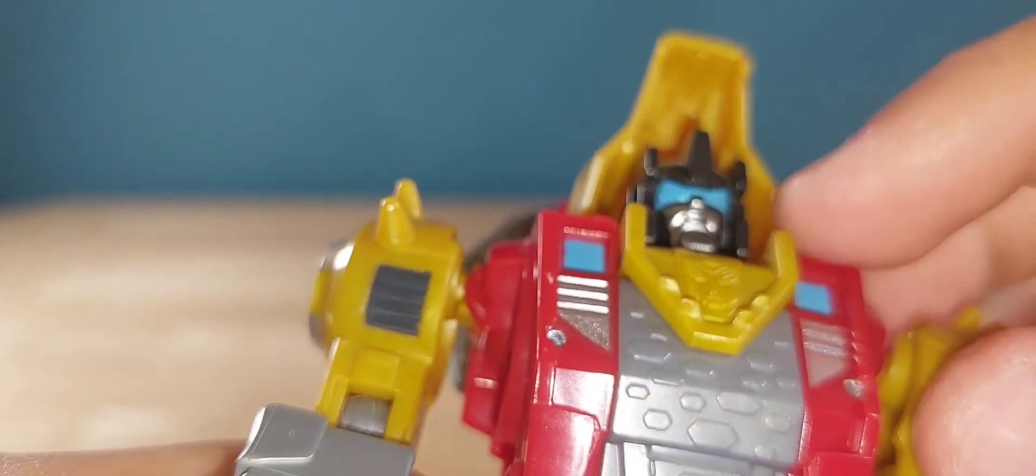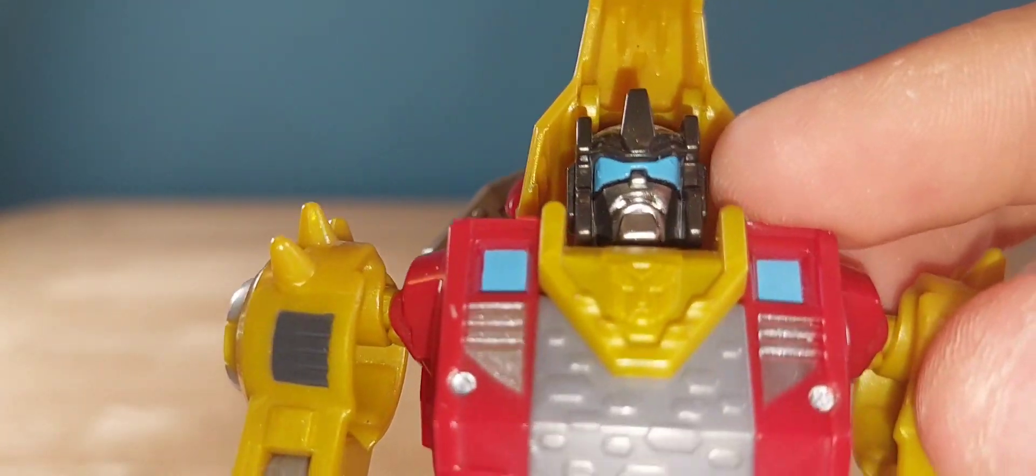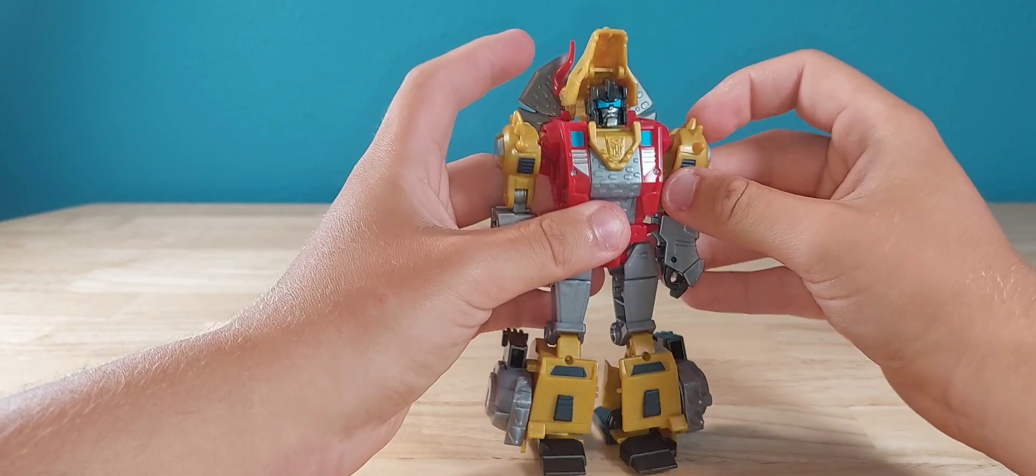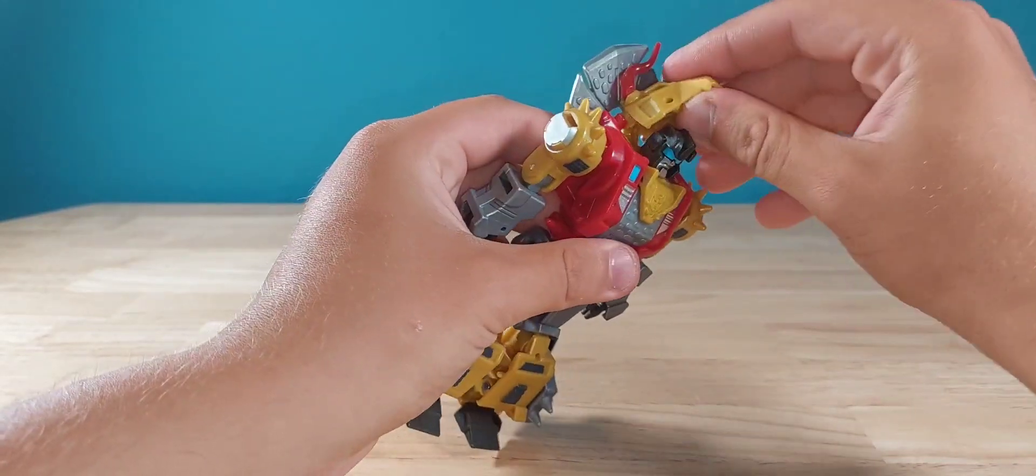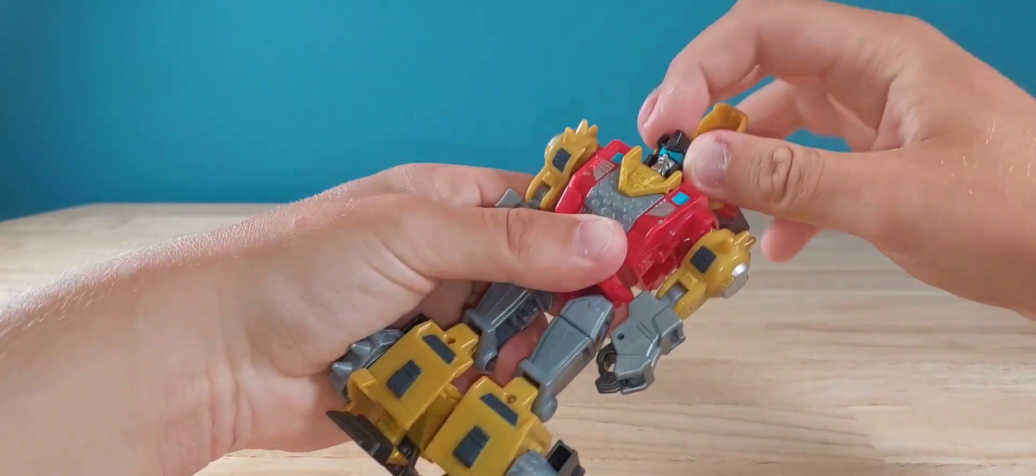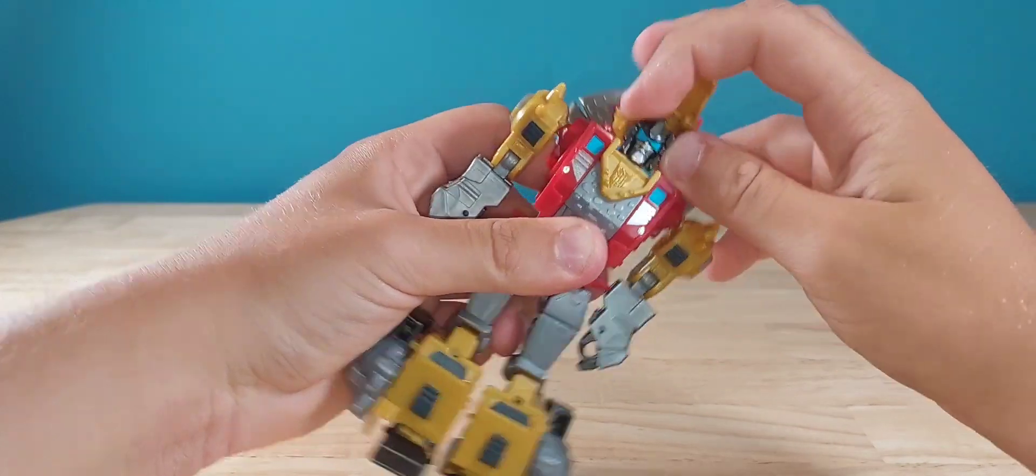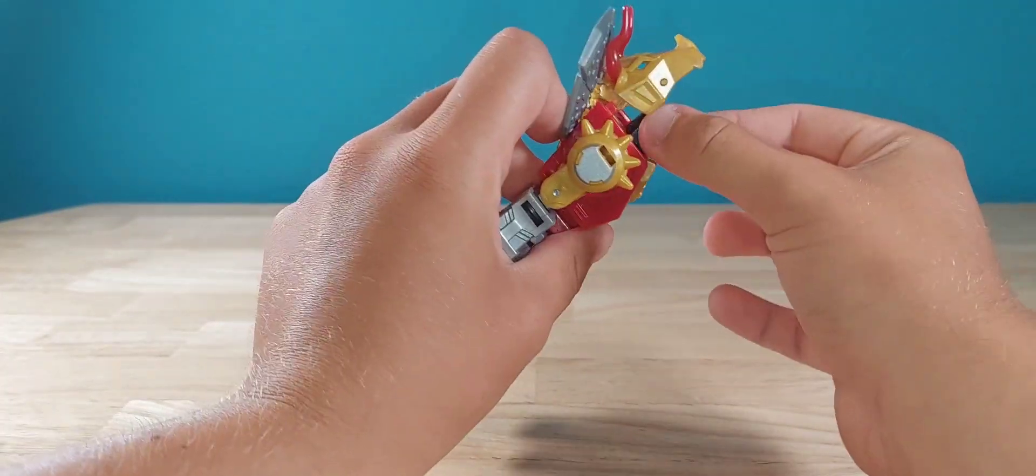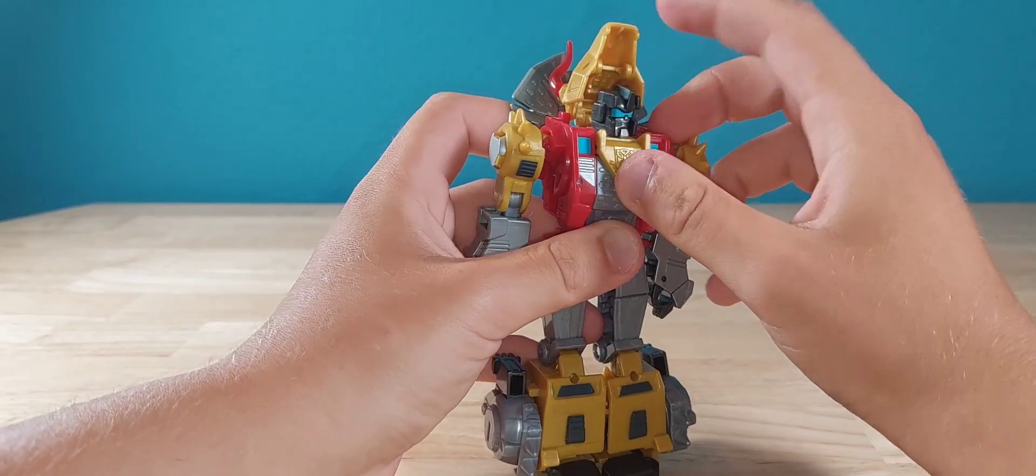Now for articulation, the head, assuming you can actually get in there, is on a ball joint so it does have a little bit side to side. Can do a full 360, can't look up or down.